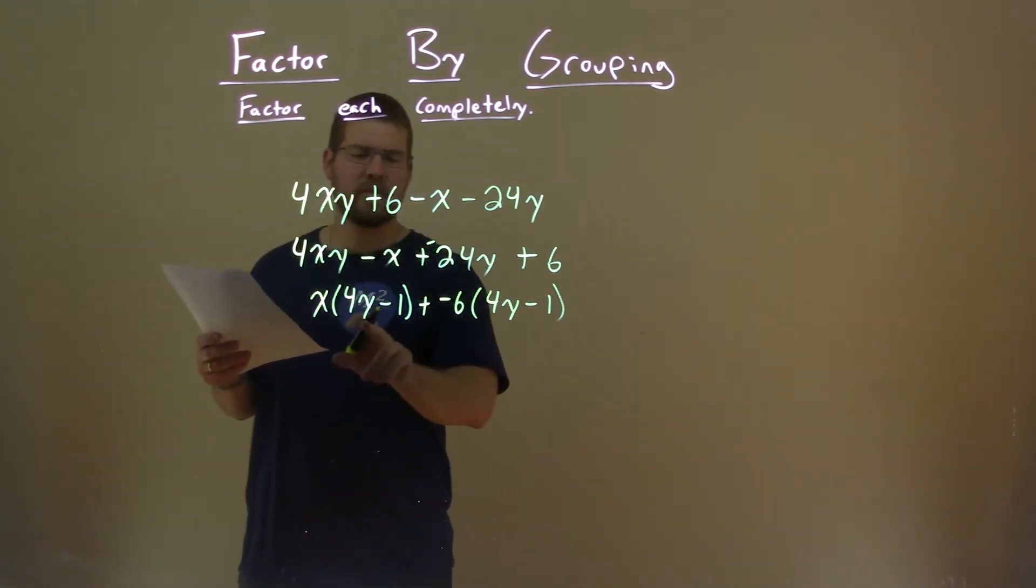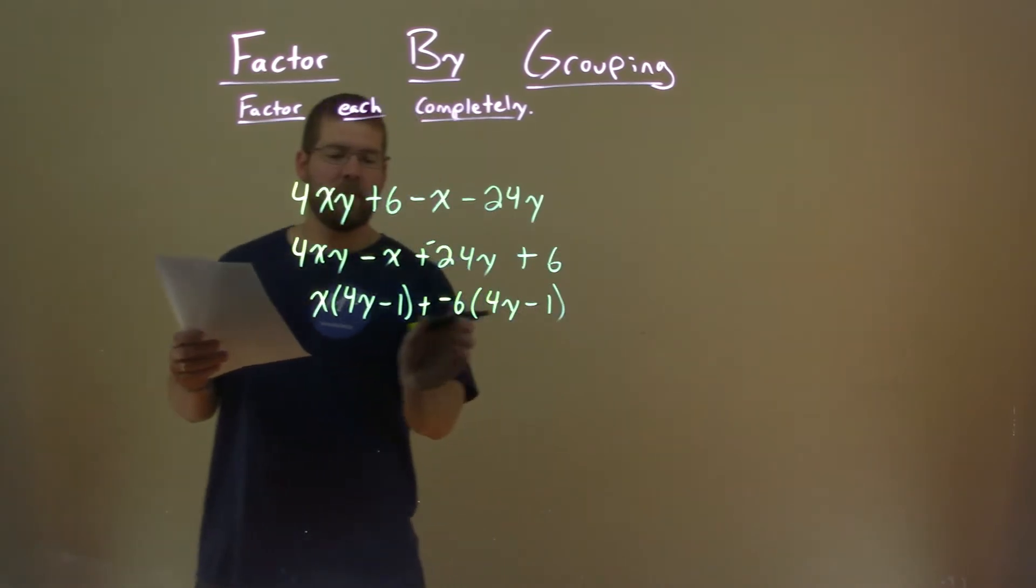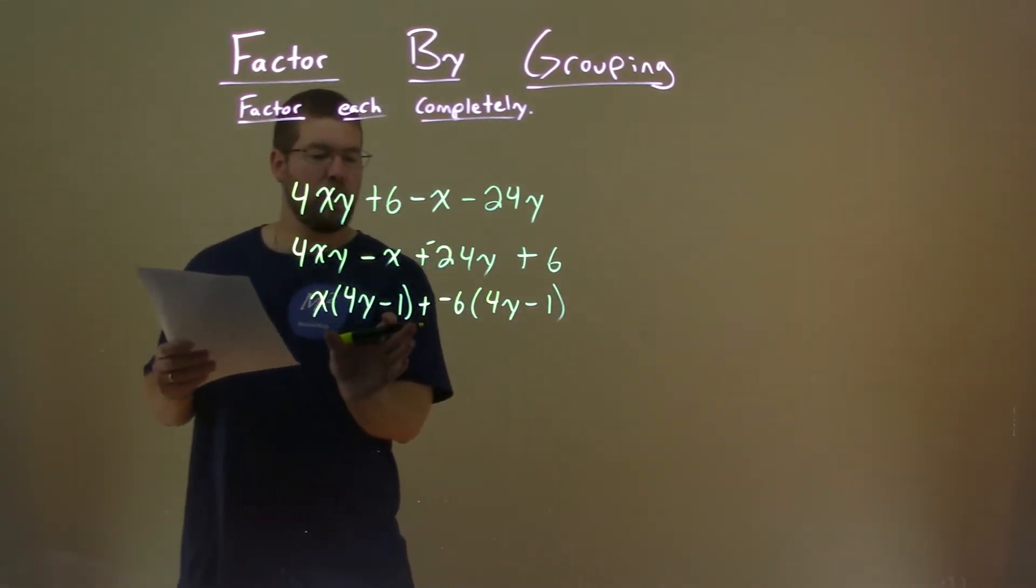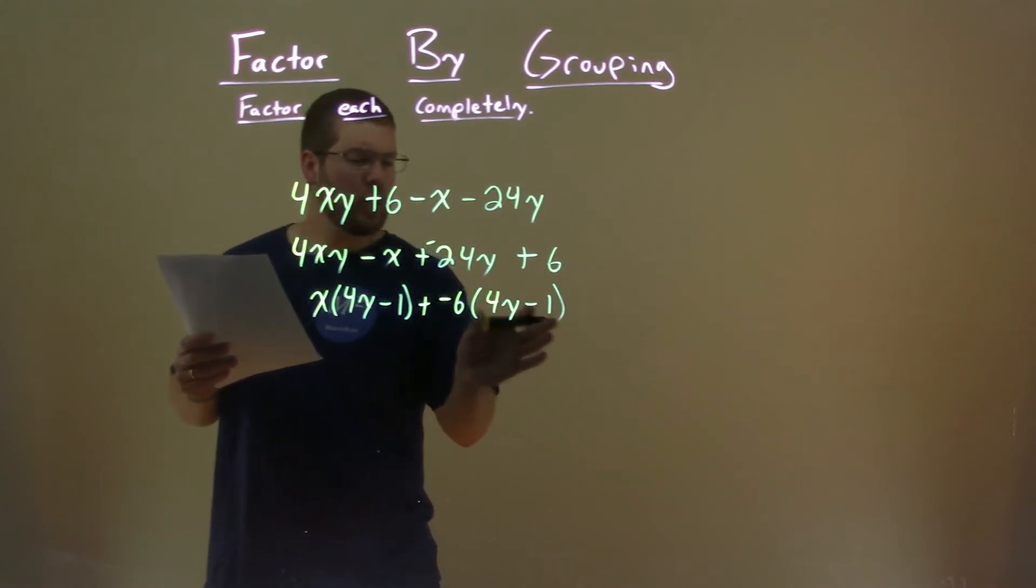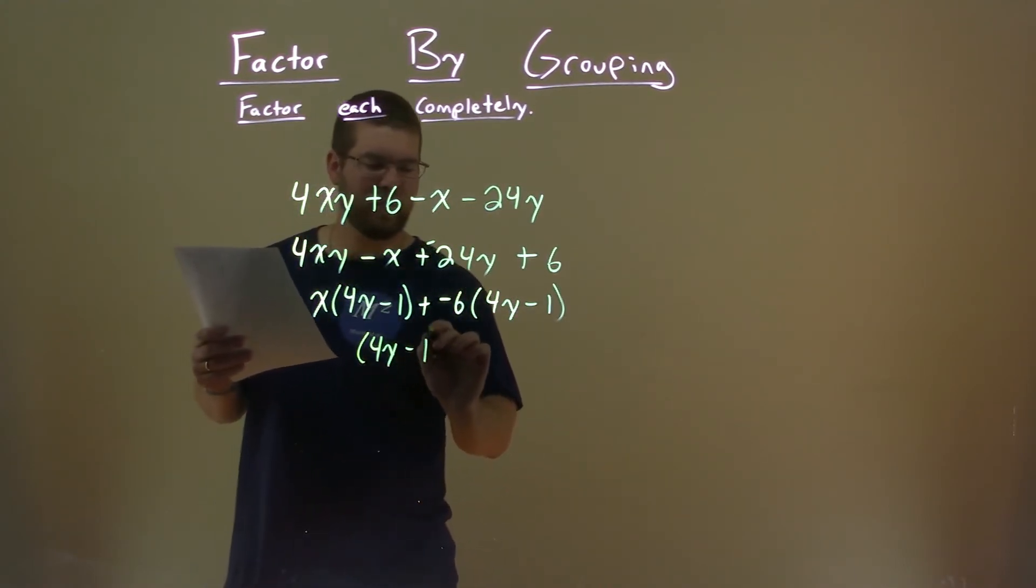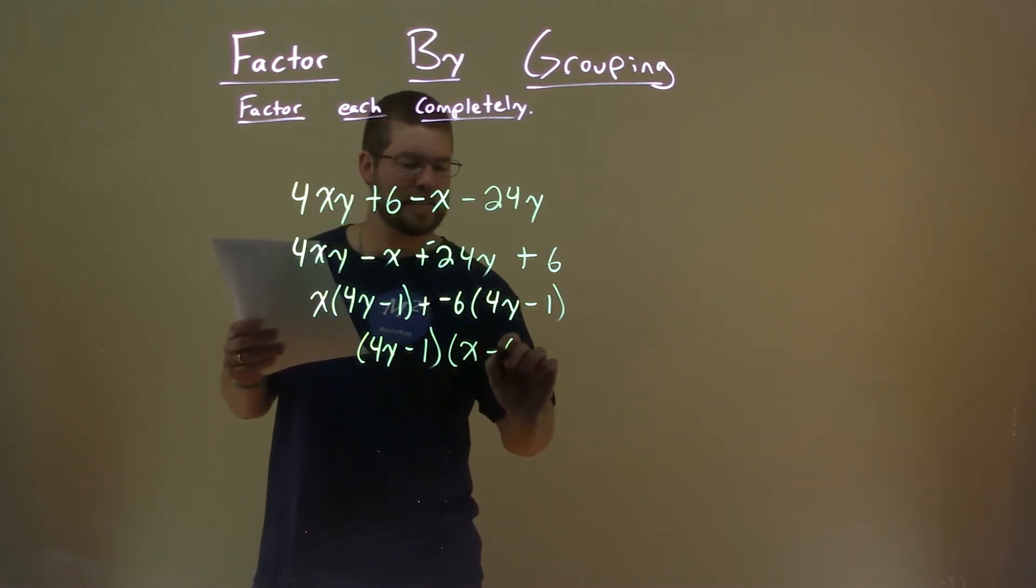And that was on purpose, because I can have 4y minus 1, and 4y minus 1 here, both written twice. They're both in both parts here. So, I can pull out the 4y minus 1, and bring down now the x minus 6.